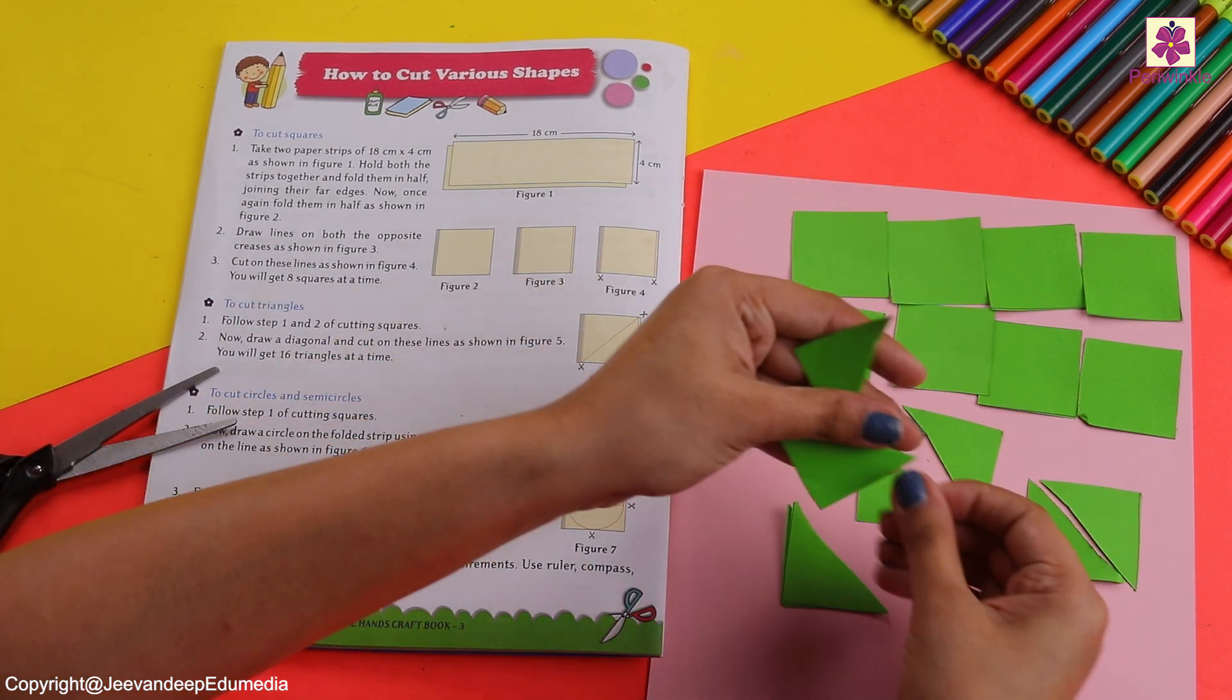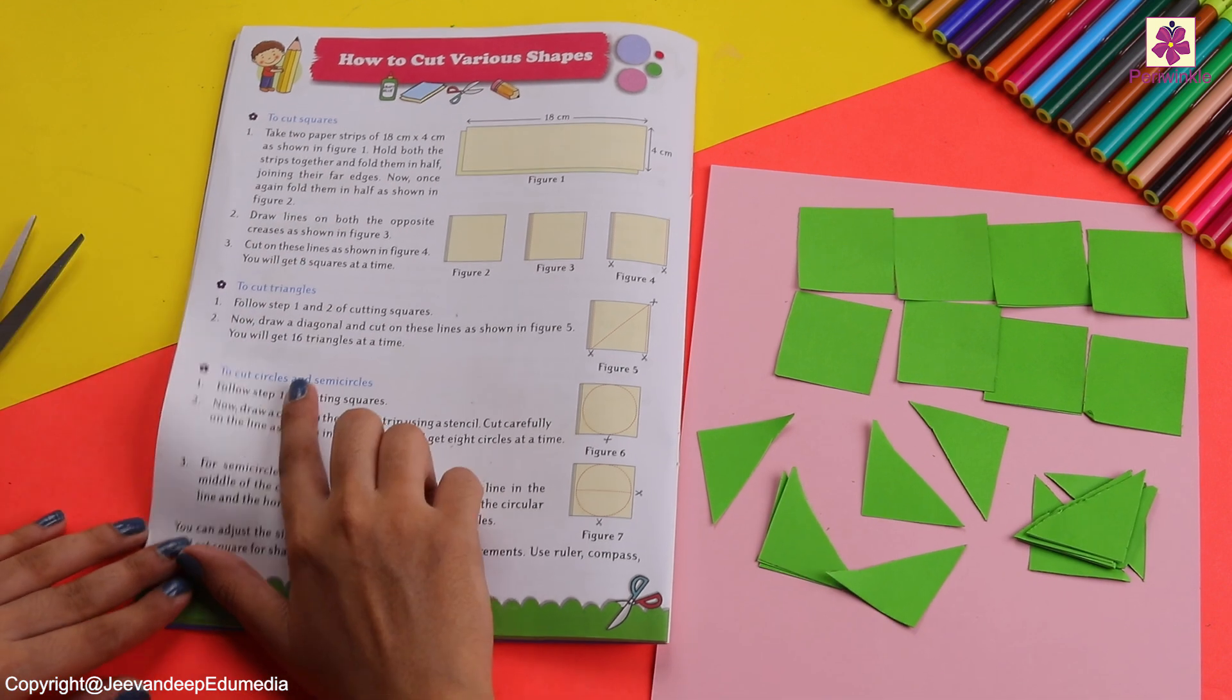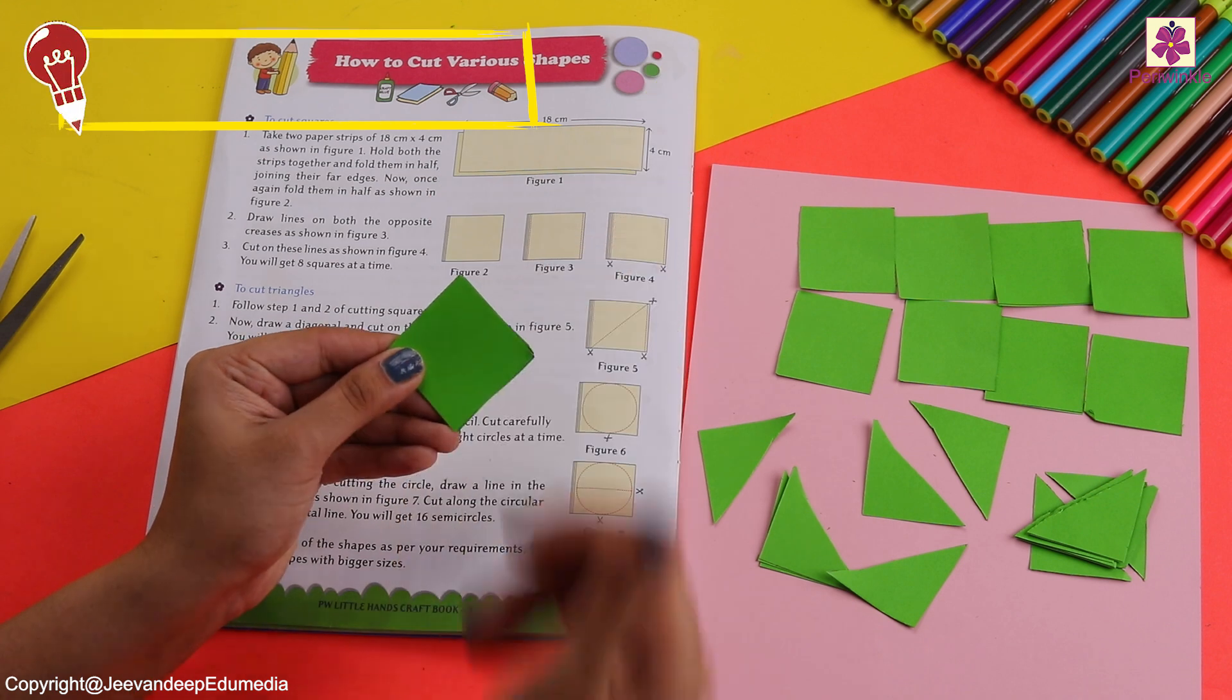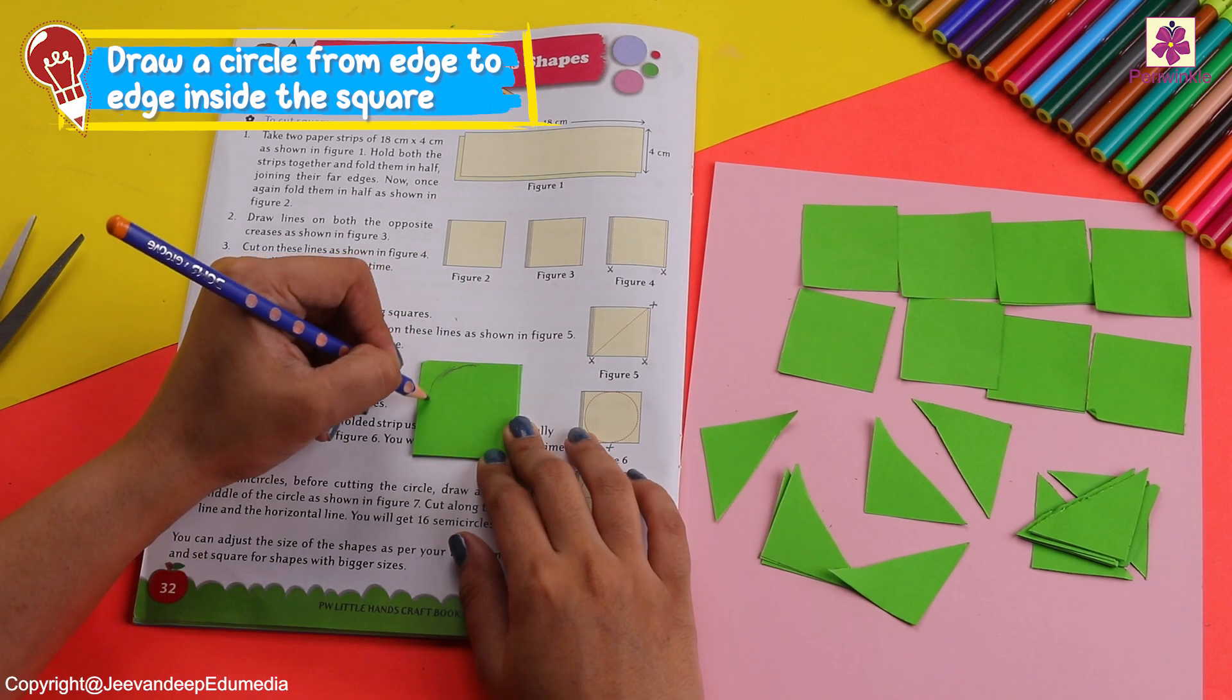You're right, we get 16 triangles. Next is cut a circle and semi-circle. Let's follow the same step and then get on to a square.